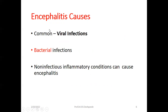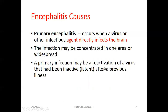The commonest cause of encephalitis is viral infections, though there are some cases of bacterial infections as well. Non-infectious inflammatory conditions can also cause encephalitis. Primary encephalitis occurs when a virus or other infectious agent directly infects the brain. The infection may be concentrated in one area or may be widespread. Primary infection may also be a reactivation of a virus which had been inactive — that is, latent — after a previous illness.